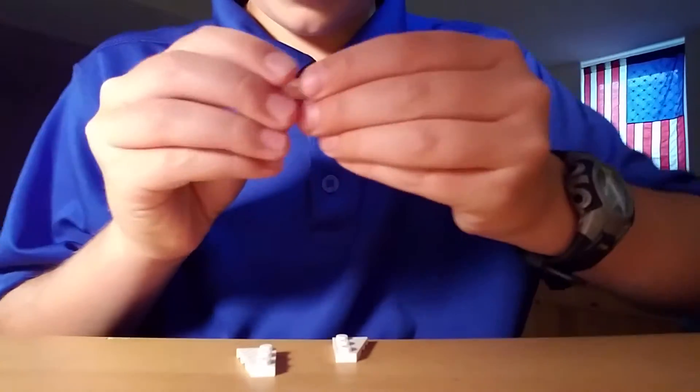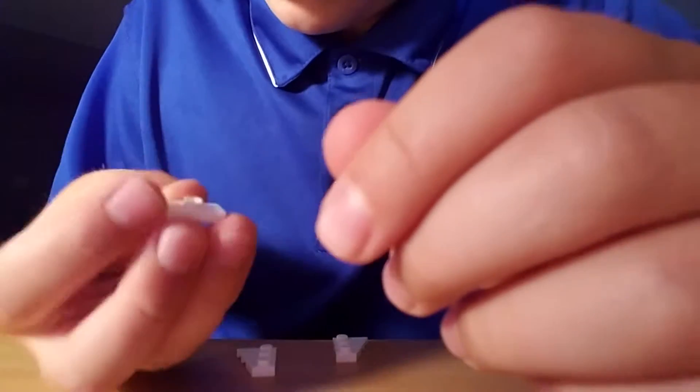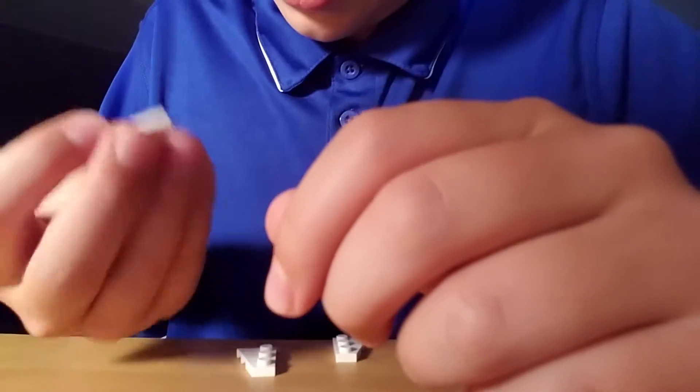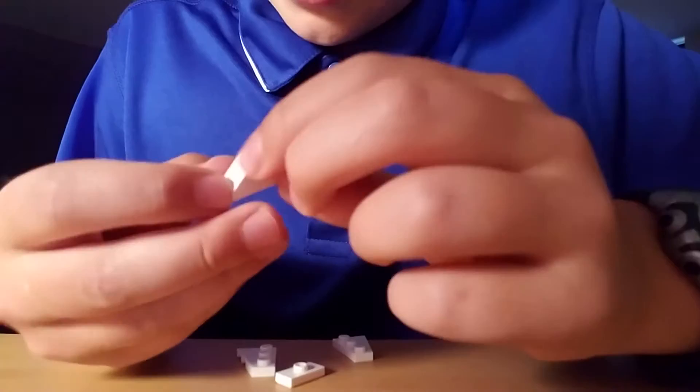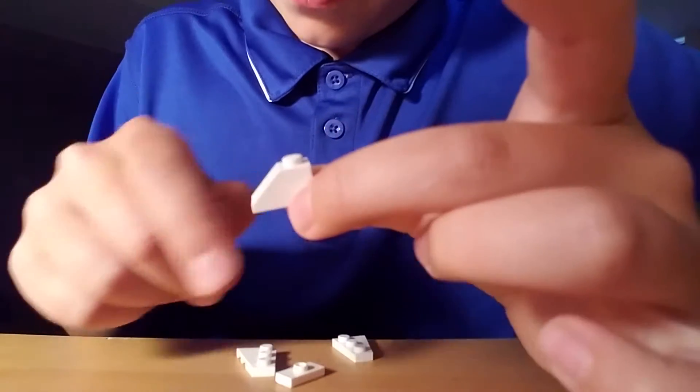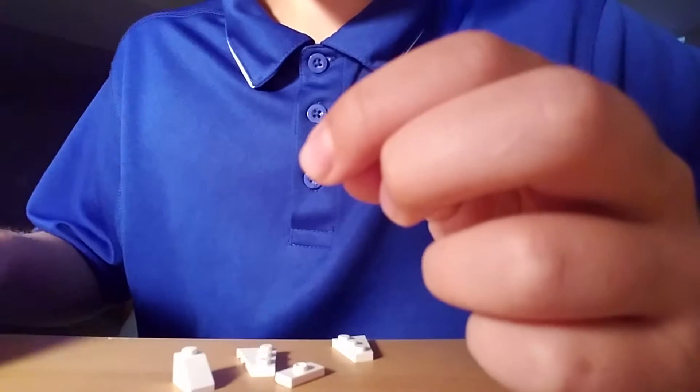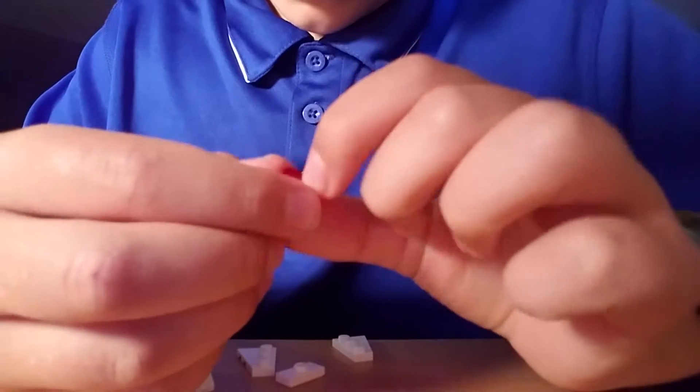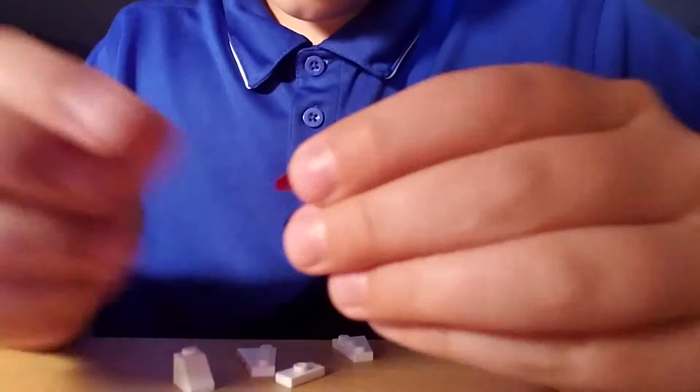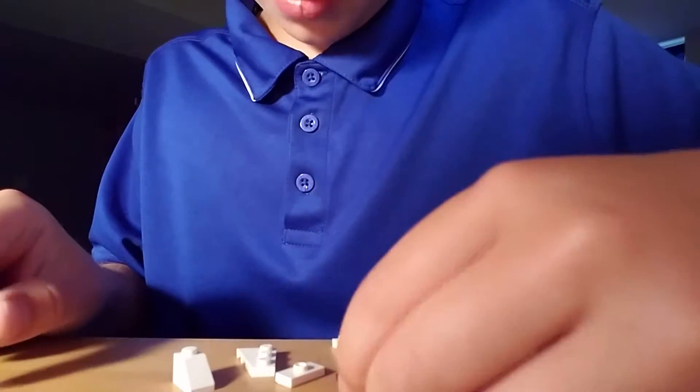Then, you're going to want a 1 by 2 piece with only one stud in the middle. It's a flat piece. Then, you're going to want a 1 by 2 piece, 1 stud flat, normal piece. Then, you're going to want to have one of these. It's a red, see-through, slant, stud piece. 1 by 1.